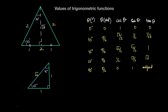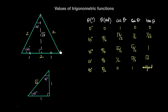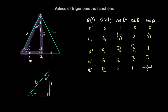Here I have two triangles. The first is an equilateral triangle where each side is 2 units, so all angles are 60 degrees. If I divide this equilateral triangle into two equal halves by dropping a perpendicular from the vertex to the base, I get two identical right-angle triangles with angles of 30, 60, and 90 degrees. The base of the right-angle triangle is 1 unit, the hypotenuse is 2 units, and the height, by Pythagoras's theorem, is the square root of 2² minus 1², which is root 3.